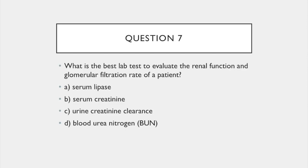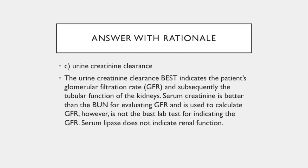Question 7. What is the best lab test to evaluate the renal function and glomerular filtration rate of a patient? A. Serum lipase. B. Serum creatinine. C. Urine creatinine clearance. Or D. Blood urea nitrogen. The answer is C: urine creatinine clearance. The urine creatinine clearance best indicates the patient's glomerular filtration rate and subsequently the tubular function of the kidneys. Serum creatinine is better than BUN for evaluating GFR and is used to calculate it; however, it is not the best lab test for indicating GFR. Serum lipase does not indicate renal function.